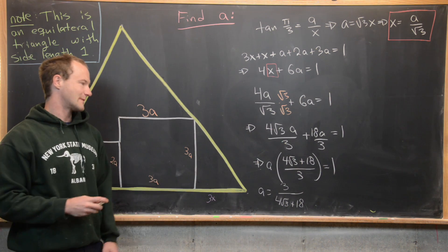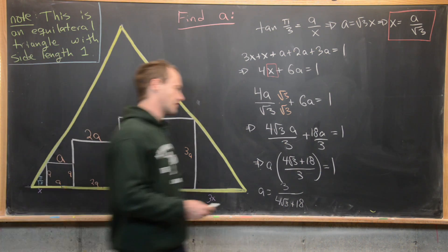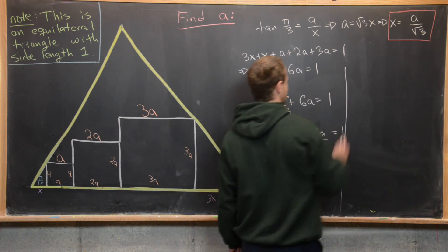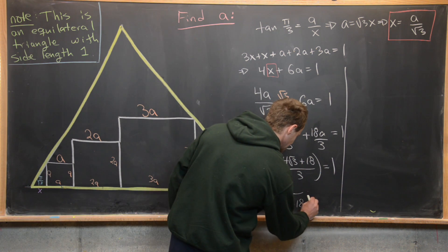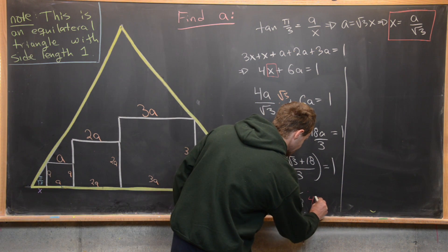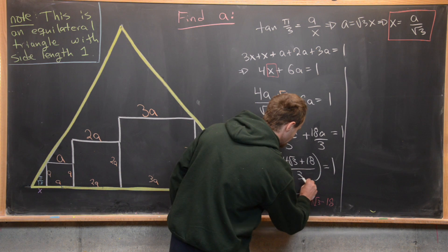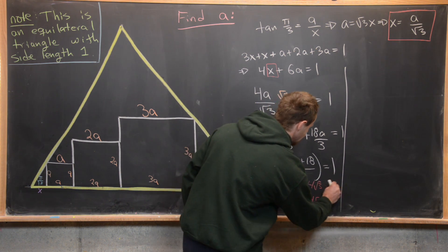And then next perhaps we'd want to rationalize the denominator although in my mind that's not strictly necessary but you could do that by multiplying this thing by 4 times root 3 minus 18 and 4 times root 3 minus 18.